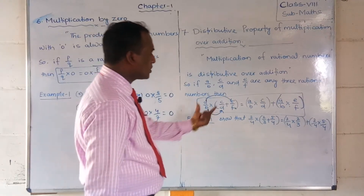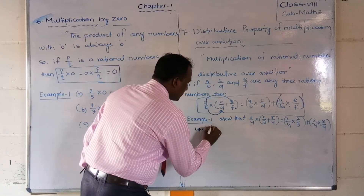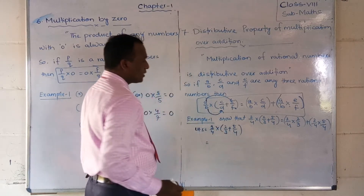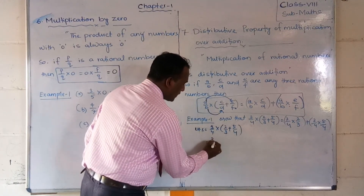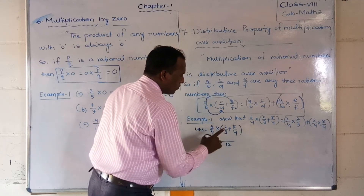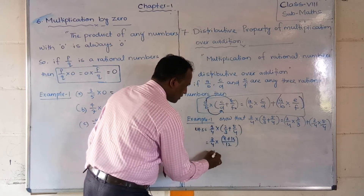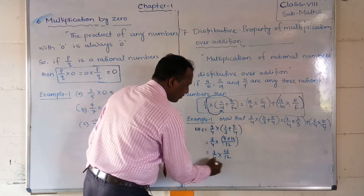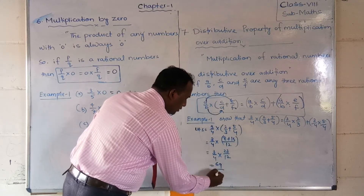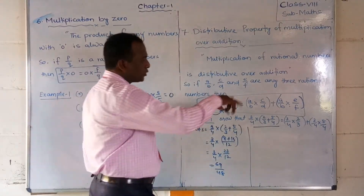We can prove whether both sides give the same value. For LHS: 3/4 × (2/3 + 5/4). First, solve the bracket — the LCM of 3 and 4 is 12. So: 12÷3 × 2 = 8, and 12÷4 × 5 = 15. The bracket becomes 23/12. Then 3/4 × 23/12: numerator 3×23 = 69, denominator 4×12 = 48. LHS = 69/48.